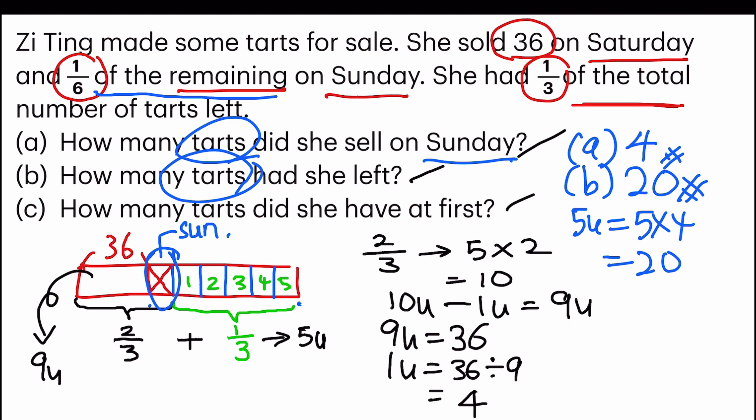C, how many tarts did she have at first? I can find that by taking six units, six times four, which gives us 24, 24 tarts, and then plus the 36 that was sold on Saturday. So 24 plus 36, that would give us 60. So C, the answer is 60.